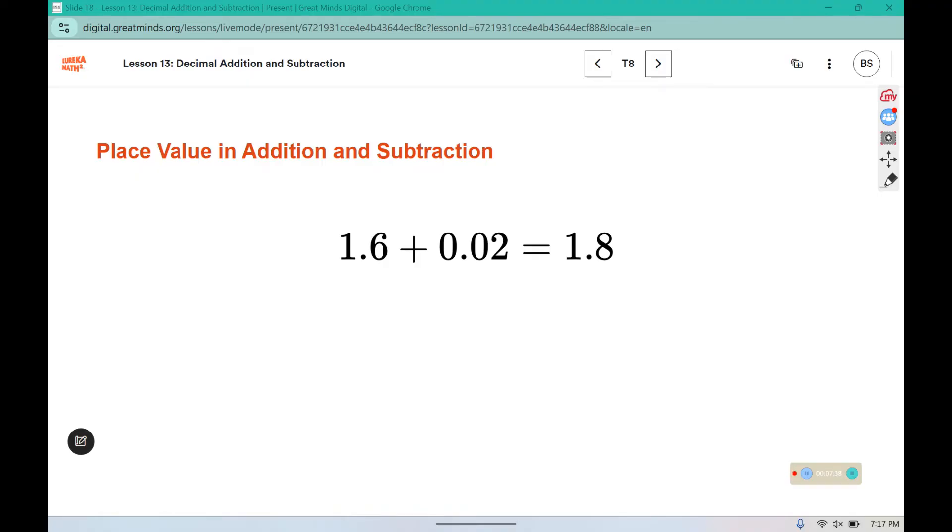A student saw this problem and added incorrectly. Let's correct his work. We need to line up our decimal spots, and in this gap we need a 0. So instead of the 6 and the 2 lining up like he thought they did, the 2 actually lines up with the hundredths place. So that would be 2, 6, and 1. We have to make sure our place values line up.